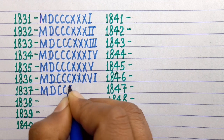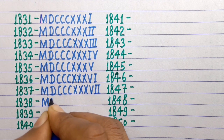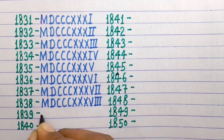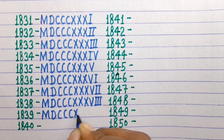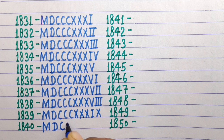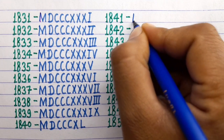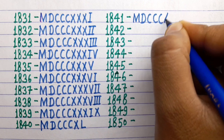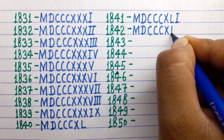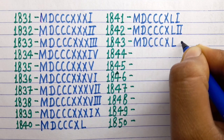1837 MDCCCXXXVI, 1838 MDCCCXXXVI, 1839 MDCCCXXXIX, 1840 MDCCCXXL, 1841 MDCCCXLI, 1842 MDCCCXLI, 1843 MDCCCXXI.